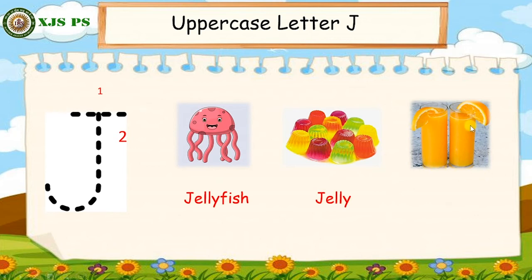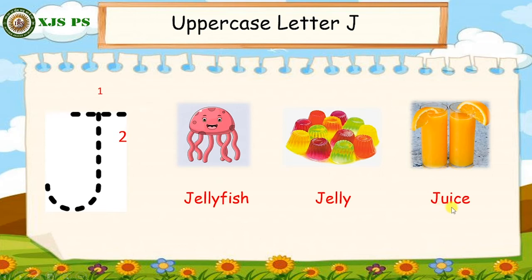What is this, everyone? What do you see in the picture? Yes, you see the orange, and then it is from orange. Yes, everyone, please repeat after me — Jellie, Jellie, Jellie. Yes, everyone, thank you. And then we go to the next letter, uppercase letter W.